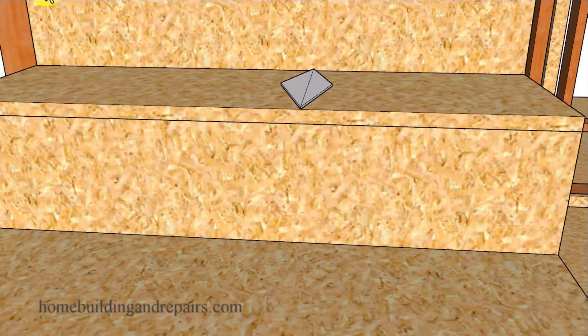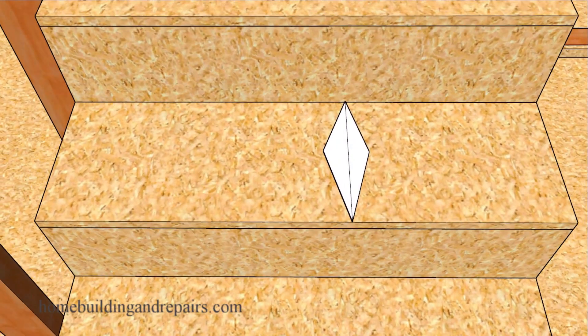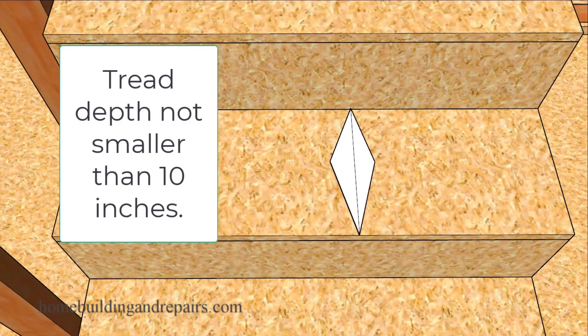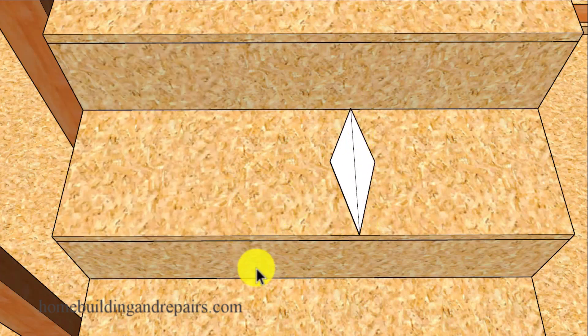Next up, the minimum tread depth will be 10 inches. However, when I first started working it was 9 inches, and the vertical riser height was 8 inches.